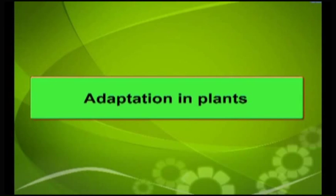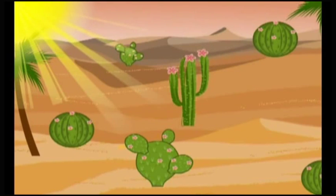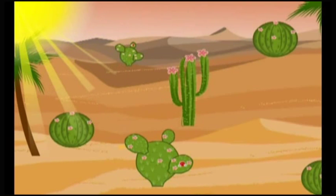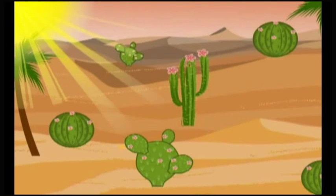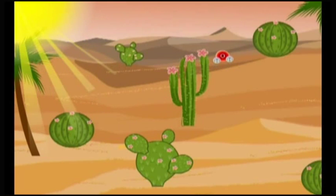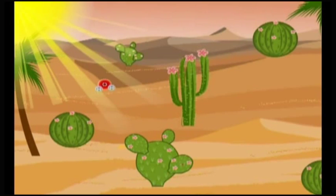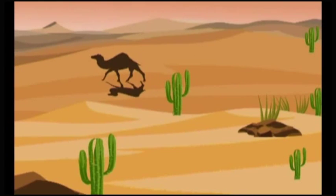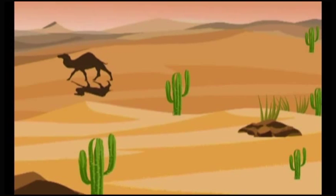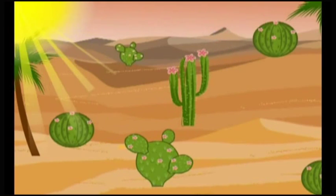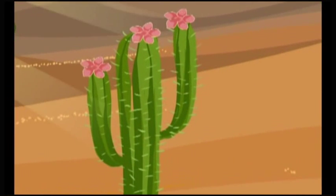Plants and animals show several structural and physiological adaptations to survive in these regions. In areas with adequate water supply, no special adaptations are seen to conserve water. However, in areas with meagre water resources, plants and animals show several adaptations. Plants tend to have narrow and small leaves or no leaves at all, which reduces the rate of transpiration and helps plants conserve water.